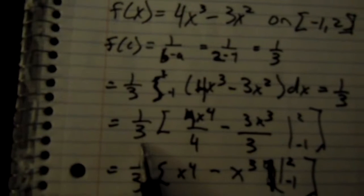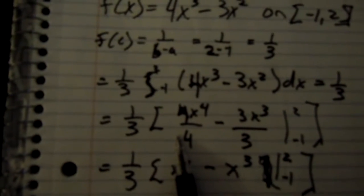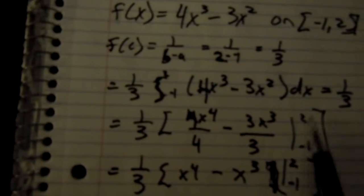And you take your antiderivative of these which is going to be 1 third times 4x to the 4th divided by 4 minus 3x to the 3rd divided by 3 on the interval negative 1 to 2.